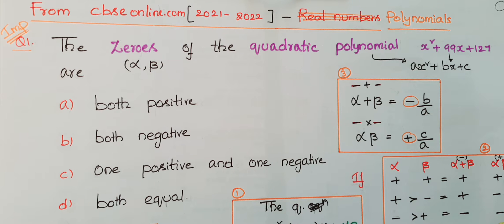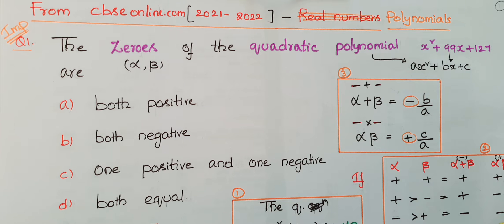Hello everyone. Today I am going to explain how to find the answers for questions based on whether the zeros of a quadratic polynomial are both positive or negative. These are from cbseonline.com, from the polynomials chapter, class 10.